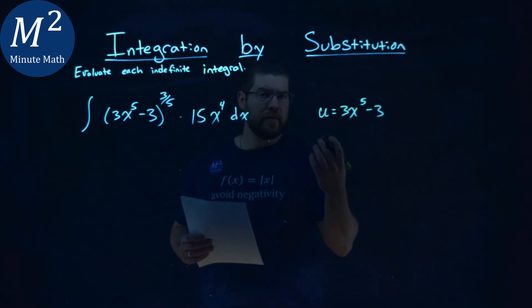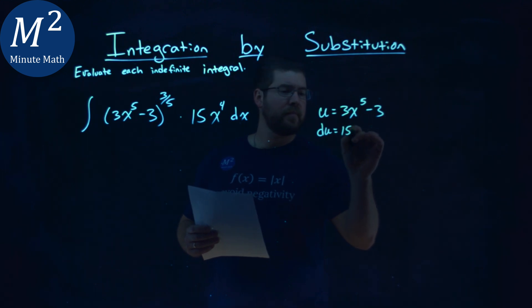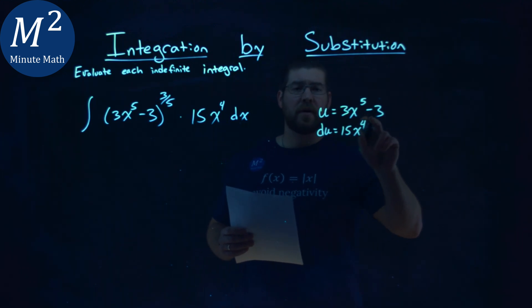If I set that to be u, I need to find my du, my derivative here. 5 times 3 is 15x to the 4th power, derivative of constant is 0, and then dx.